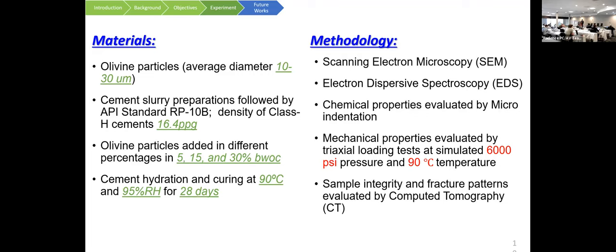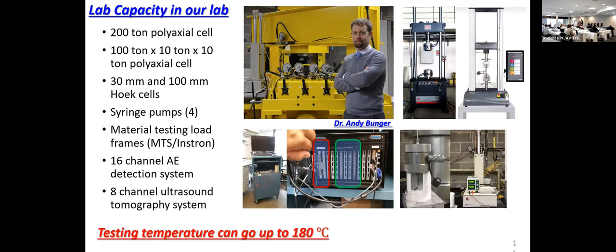The cement was hydrated and cured at 90°C and 95% relative humidity for 28 days. Our methodology includes SEM, XRD, micro-indentation, UCS testing at high temperature and high pressure, long-term creep testing, and finally we sent samples to NETL to scan internal fracture patterns. Before presenting results, I want to share our lab capacity here at Pitt. This is my PhD advisor, and he has a polyaxial cell — a big yellow frame — which is the 'Lamborghini' of the lab.